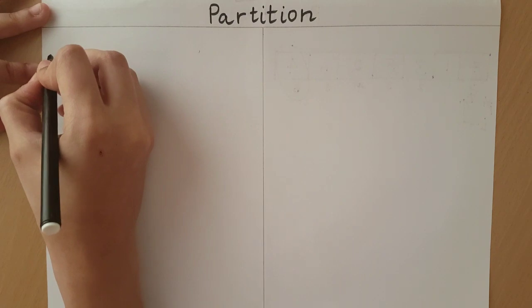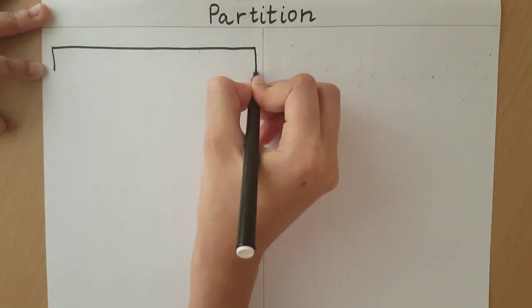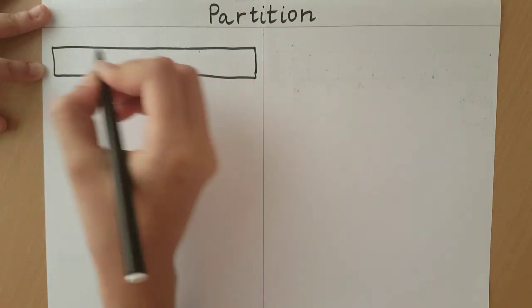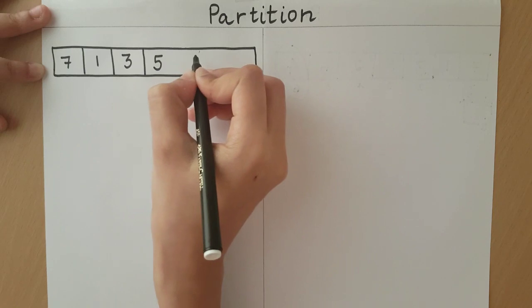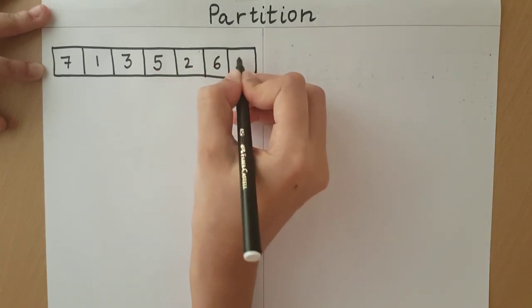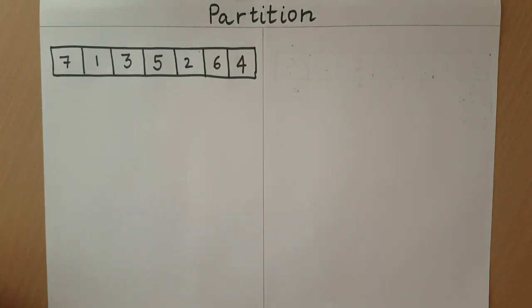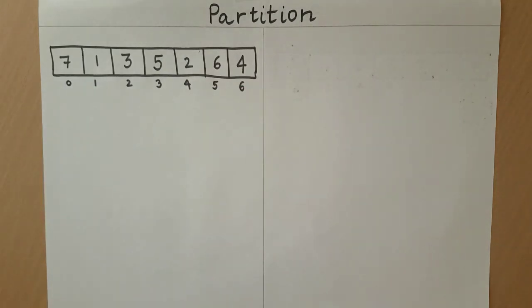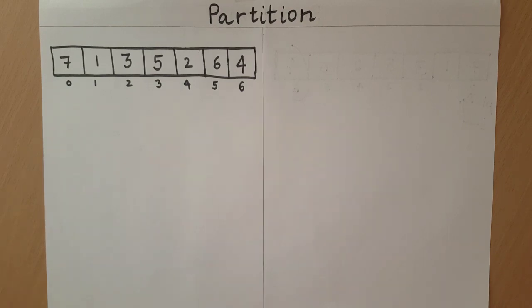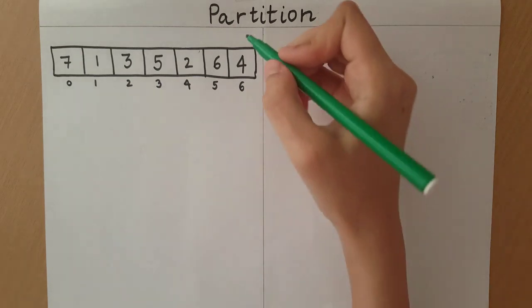With a sample array, let us see how this partition algorithm works. I have written down the elements of the array and now I am going to write down the indexes. The first step of the partition algorithm is to choose a pivot. This pivot can be chosen as any element of the array, but for convenience sake, let us choose the pivot as the last element of the array. In this case, our pivot is 4.